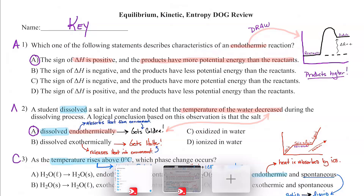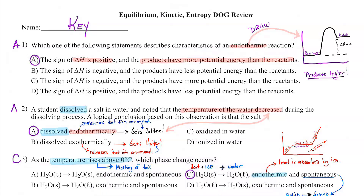Let's get started reviewing the Equilibrium Kinetic Entropy Dog Review. Let's be crazy and start in order. We're looking at number one: which of the following statements describes characteristics of an endothermic reaction? That's key. Endothermic means we're absorbing energy, taking energy in.